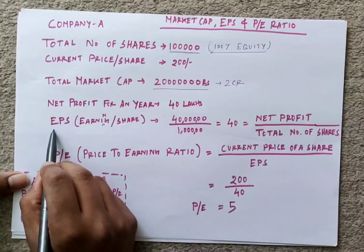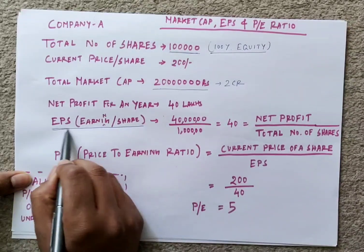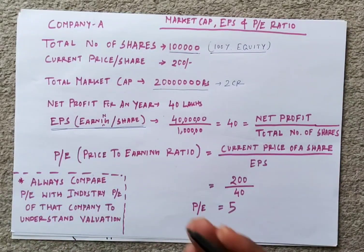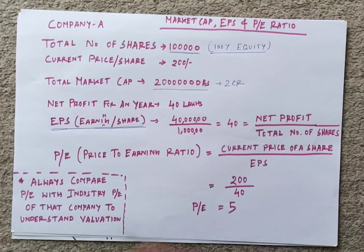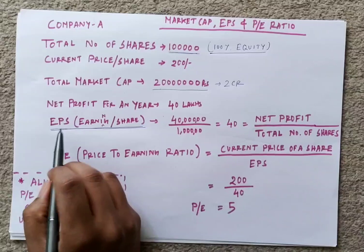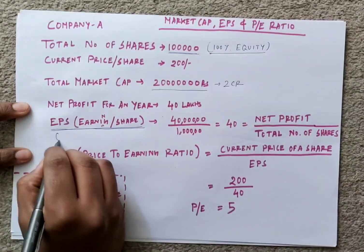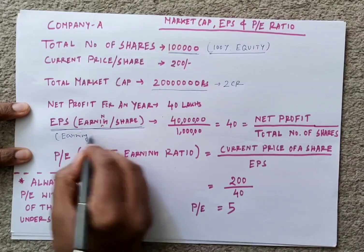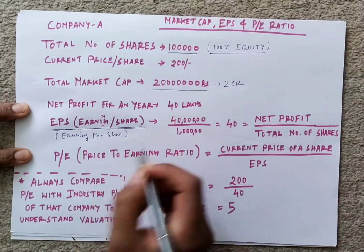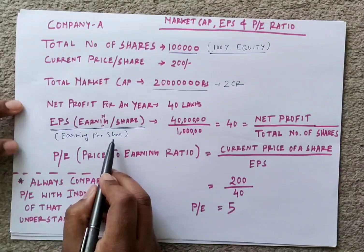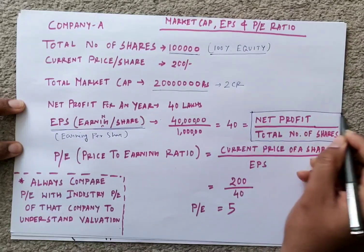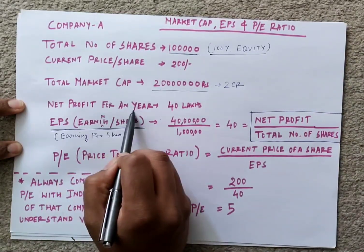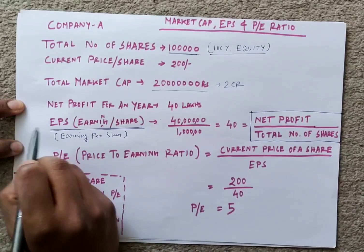Now we'll understand what EPS is. In every quarterly board meeting, companies release their quarterly performance. You will hear them mention that the EPS for this quarter is 10 rupees or 20 rupees. EPS stands for Earnings Per Share, which is calculated as net profit divided by total number of shares.